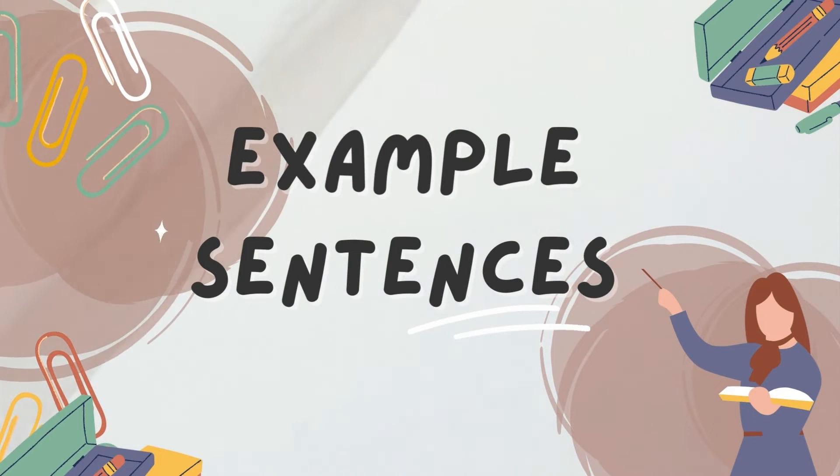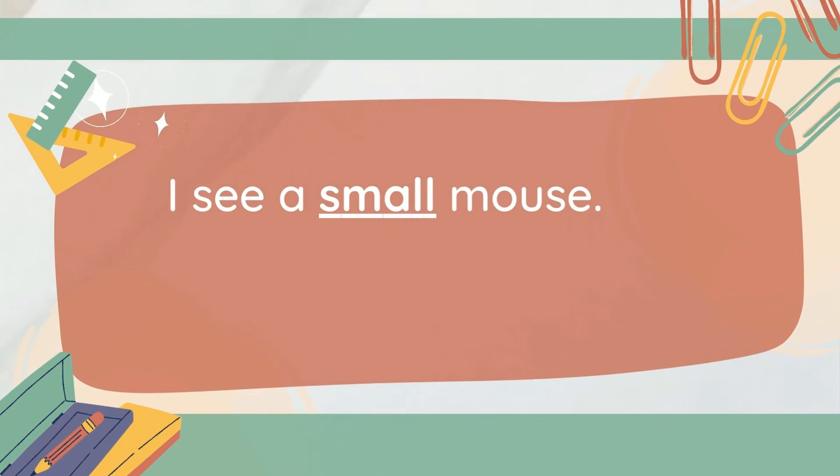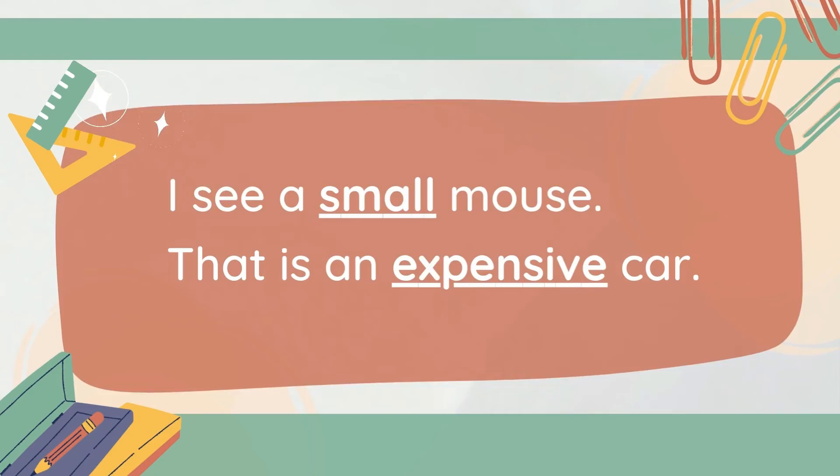Let's have example sentences. I see a small mouse. That is an expensive car. The underlined words are examples of adjectives.